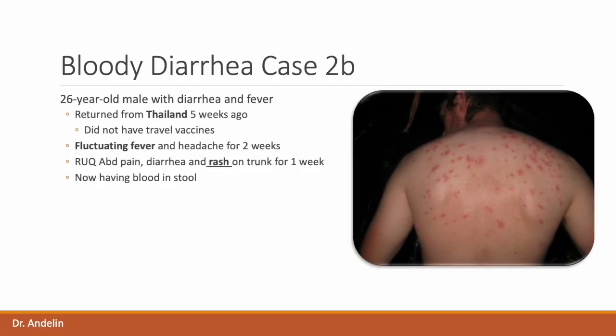Let's contrast our first Salmonella case to this one, a 26-year-old male with diarrhea and fever who returned from a trip to Thailand about five weeks ago having not undergone any vaccinations. Over the last two weeks, he's developed a fluctuating fever that rises during the day and drops in the morning. He's also having headache, right lower quadrant abdominal pain, and diarrhea. Additionally, he's noticed a rash with red spots on his trunk and is now starting to have blood in his stool. This is a case of typhoid fever caused by Salmonella typhi.